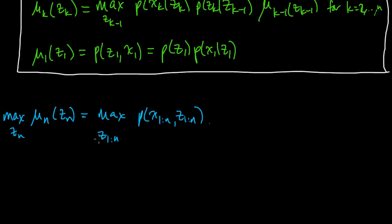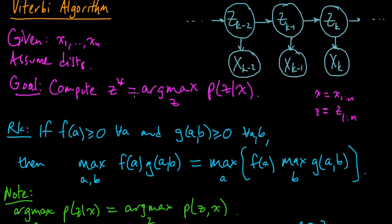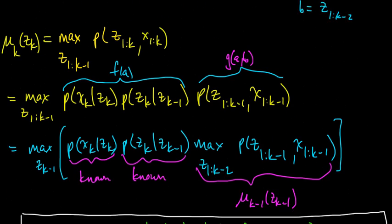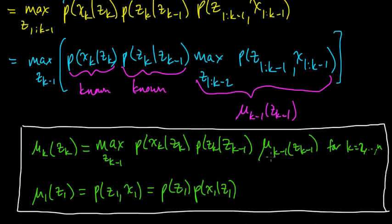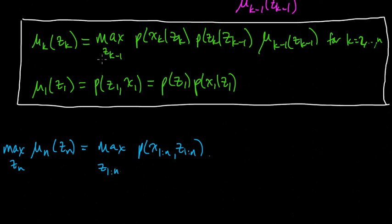We got the maximizing value, but wait — we wanted the maximizing sequence. We wanted the argmax, not just the maximum value. It turns out that to get the argmax, you follow essentially the same procedure. If you implement this algorithm in code, at each step you keep track of the maximizing sequence. Then for the kth step, you can compute the maximizing sequence up to k.